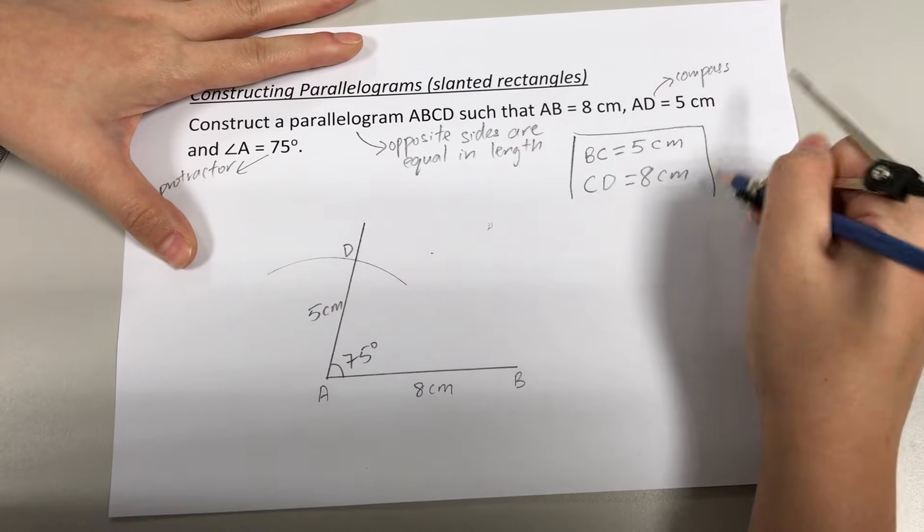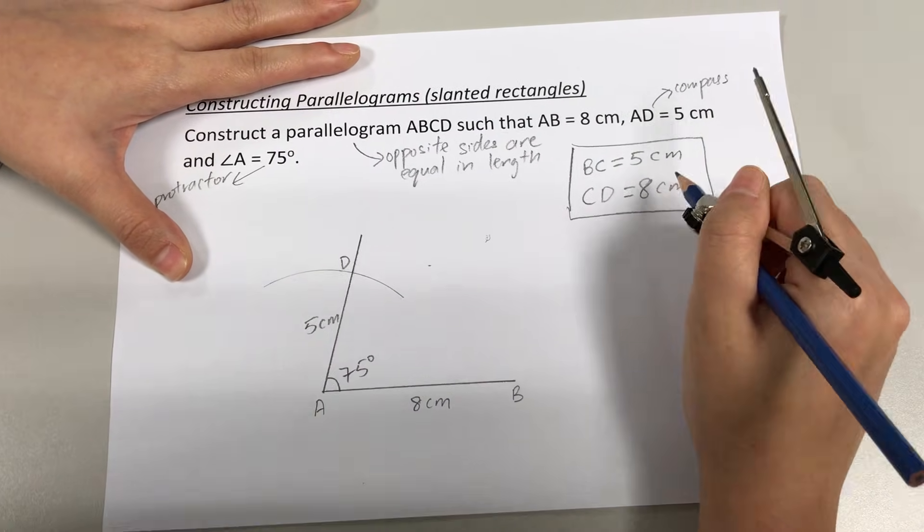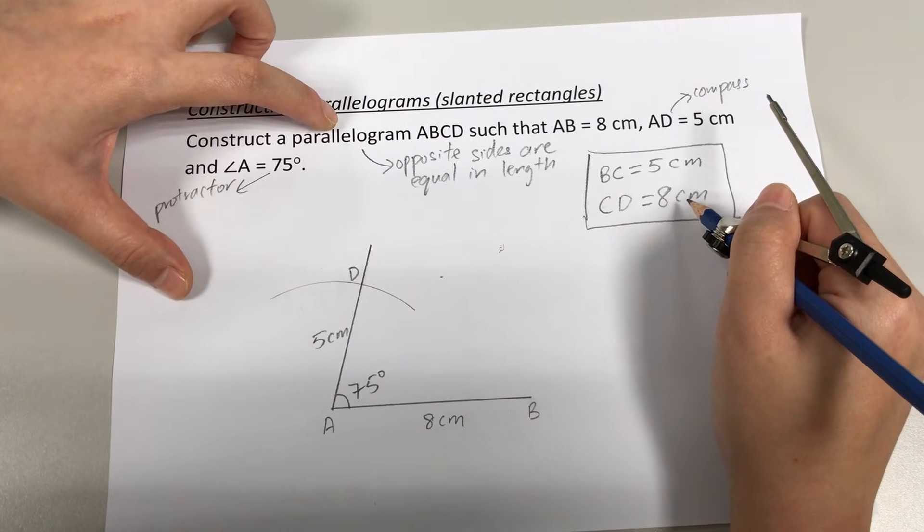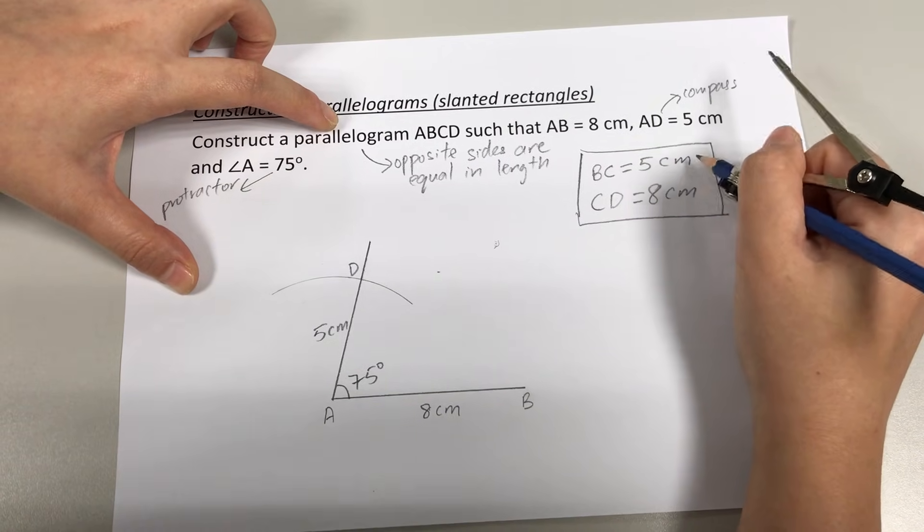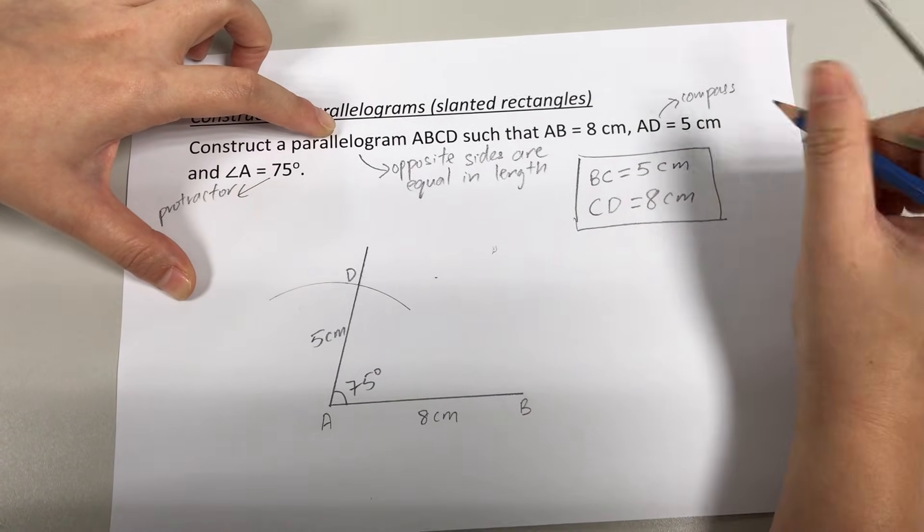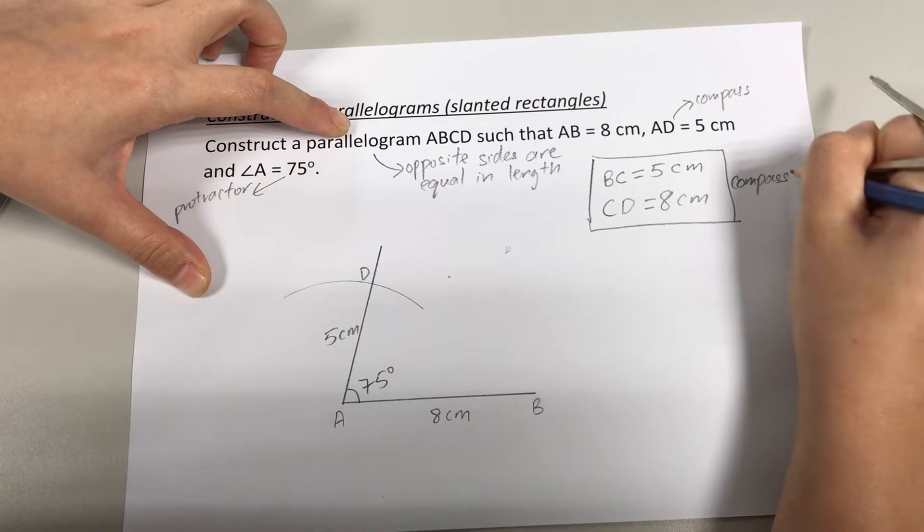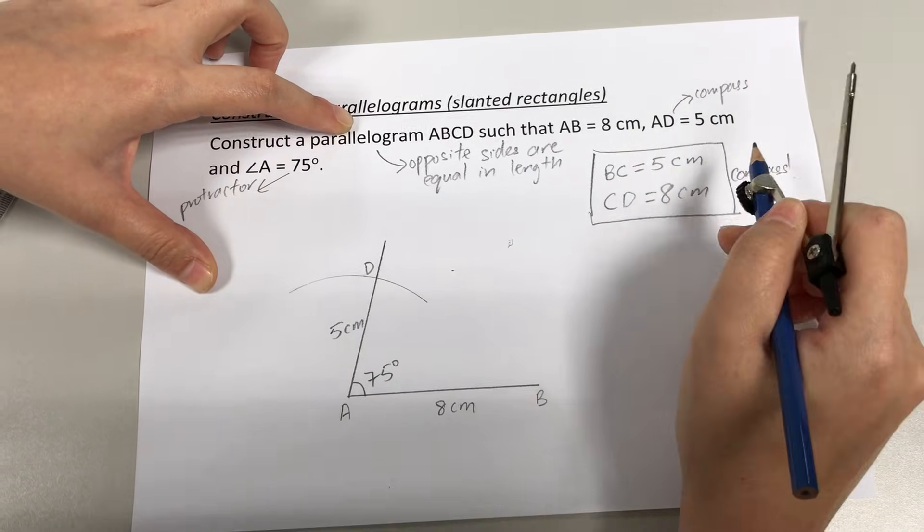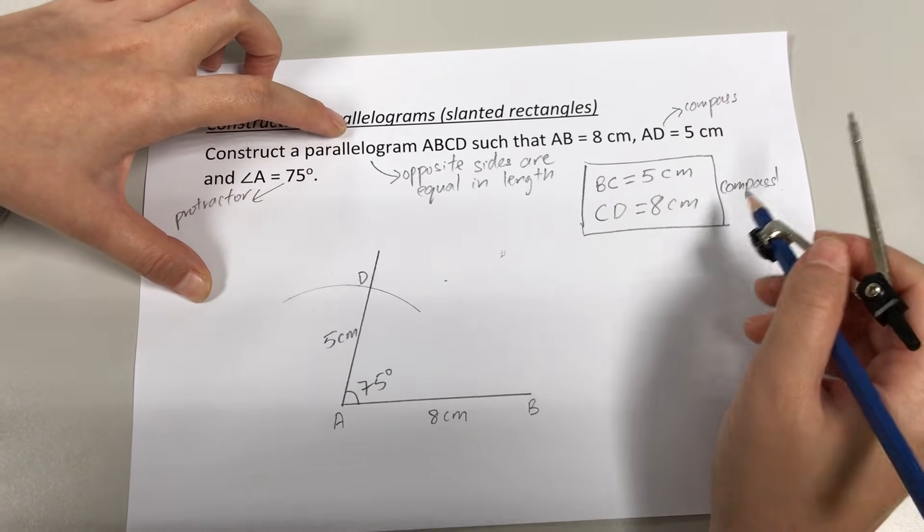So over here will be 8 cm for CD, BC will be 5 cm. These are two important additional information that you need to think of on your own based on the property of a parallelogram. And because these two additional information are lengths, both of them have to be drawn using a compass, just like what you did to draw the 5 cm length. These two additional lengths are to be drawn using your compass as well.